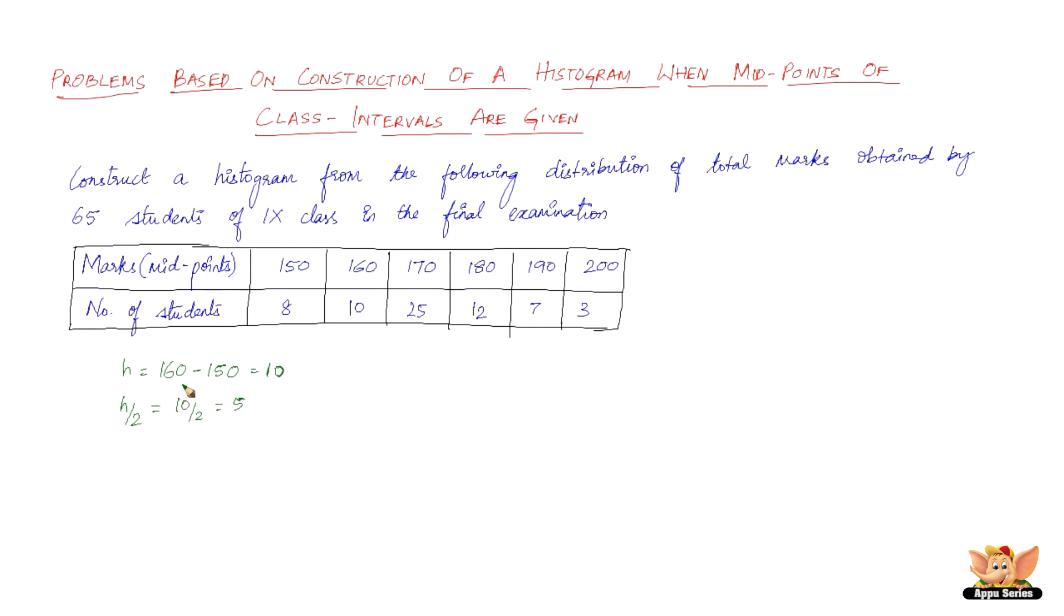So now this is going to change like this. We're going to have marks in the form of class intervals, not in the form of midpoints. The first class interval is going to be 145 to 155, because we subtract 5 from 150, that is 150 minus 5, which is 145.